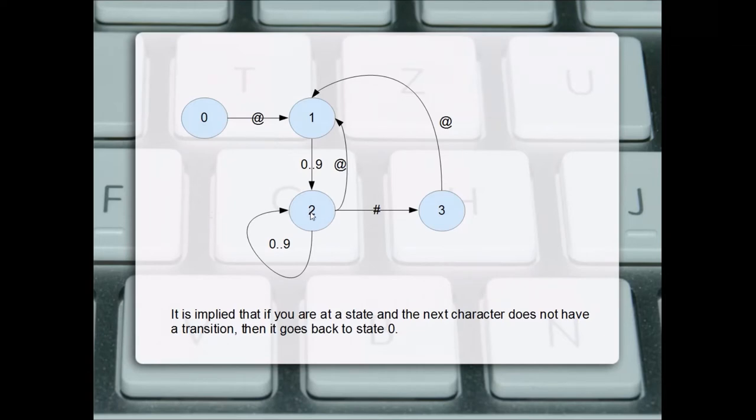From state two, if the next digit is an @ sign, that's the beginning of the pattern, so we go back to state one. Because it could be two @ signs in a row followed by digits and a number sign. From state two, if we see a number sign, we move to state three.